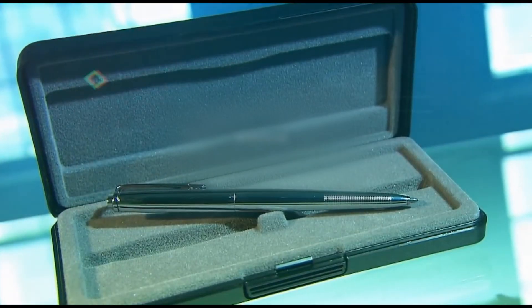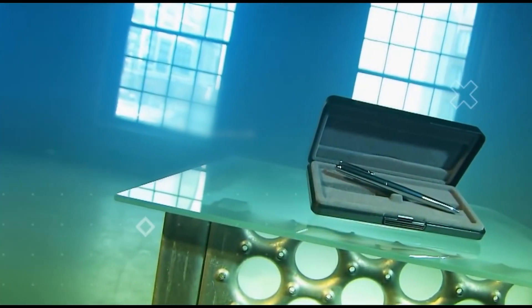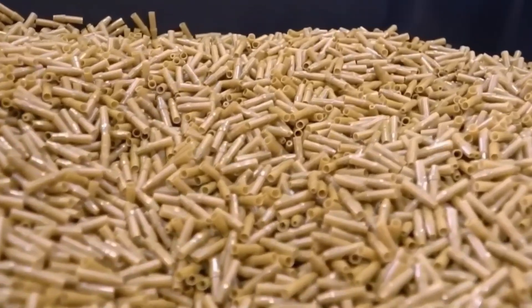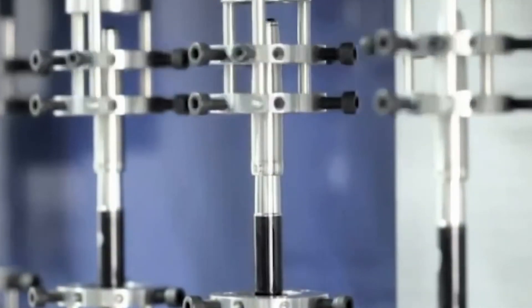We heat these sheets first so they're soft enough to shape. Then they're pressed into dies, which are molds to make the shapes of the pen's parts, such as the clip and the tip.